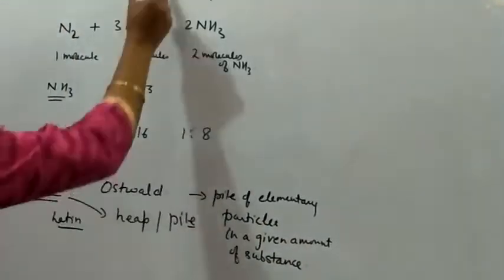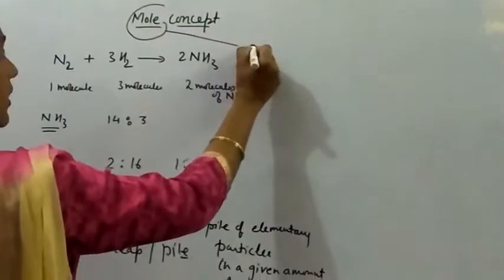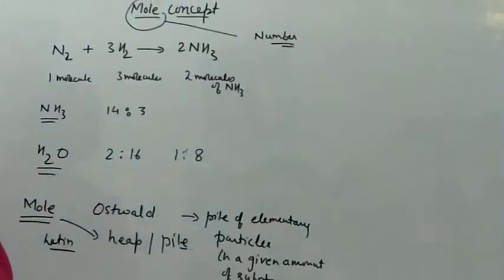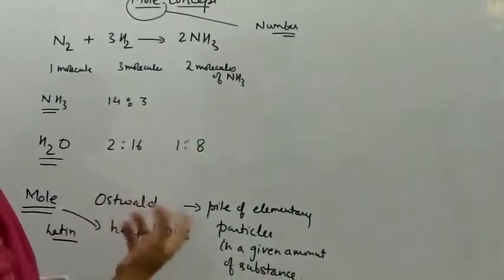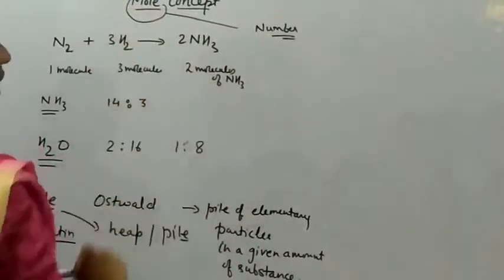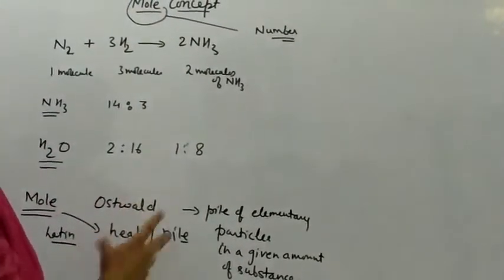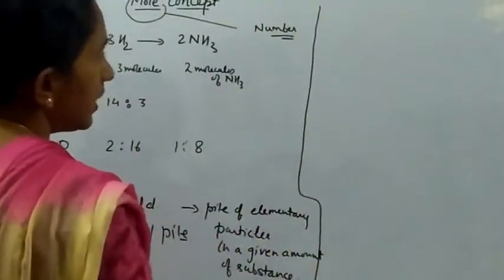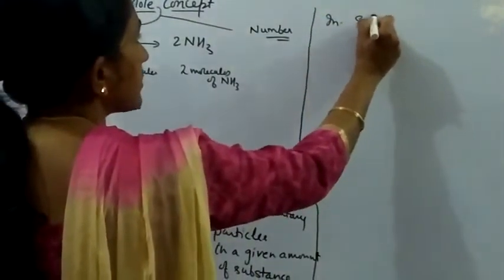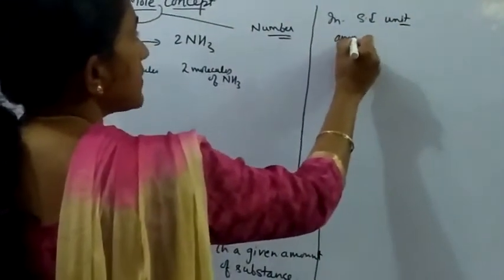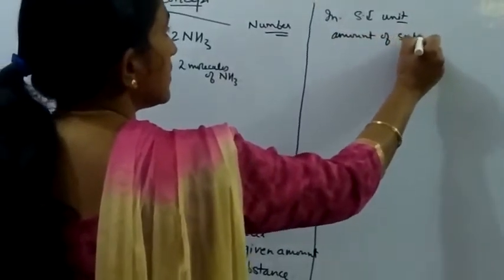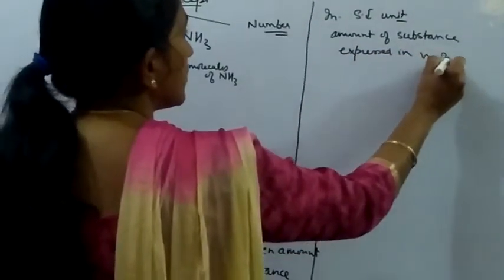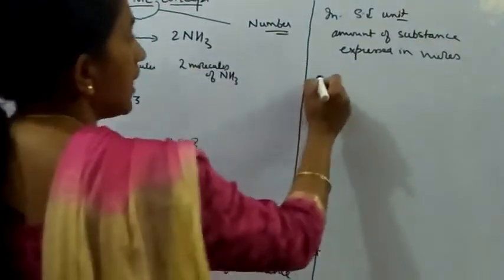Now we can conclude that a mole is a number — a counting number. Just as we count a number of bananas or eggs by the dozen, in the same way, to count the number of elementary particles, we have the word 'mole'. In SI units, the amount of substance is expressed in moles.